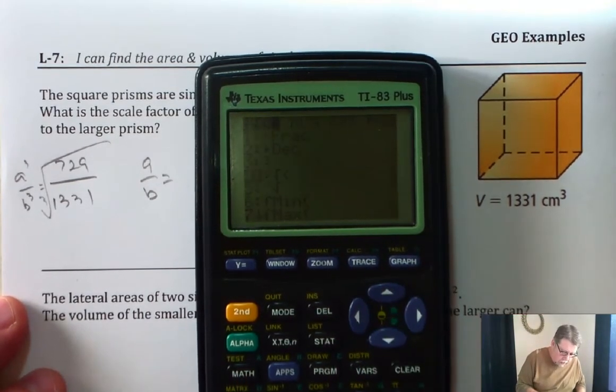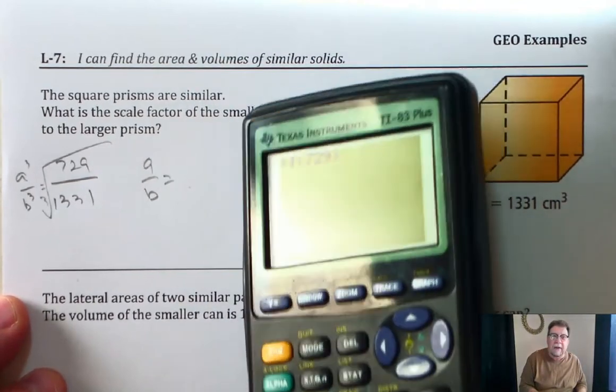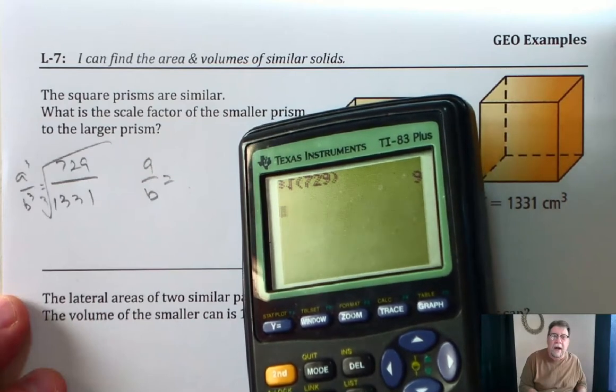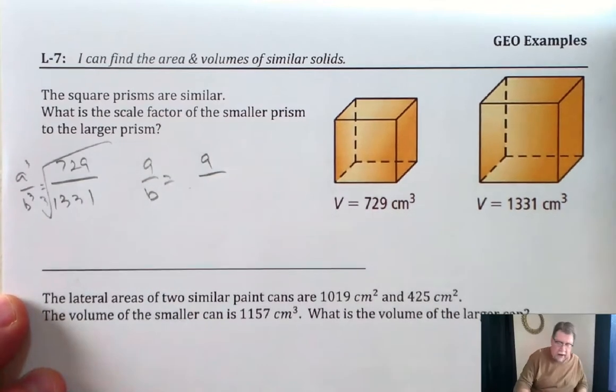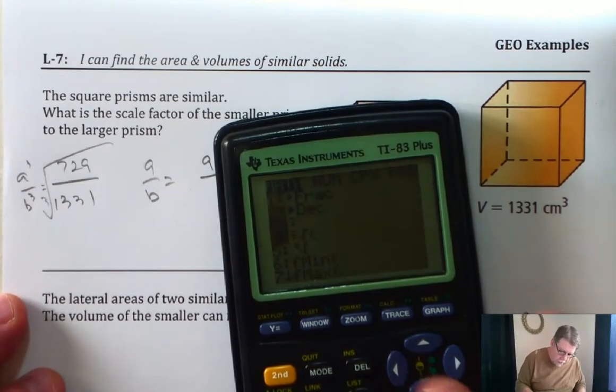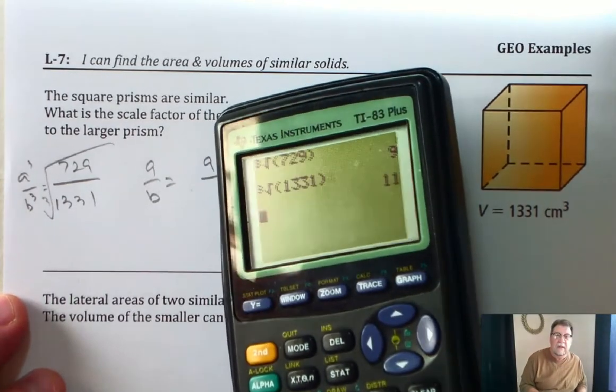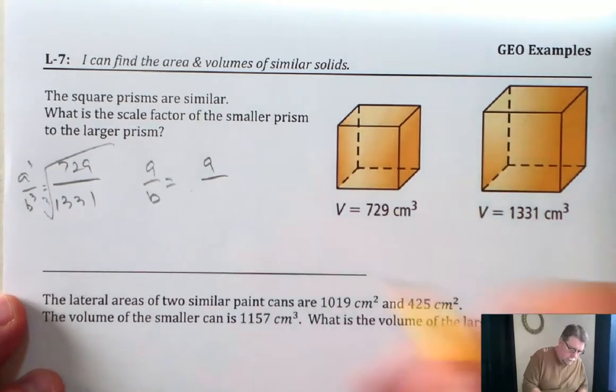My cubed root button is here. And so if you can see that, I really should have my other calculator. The cubed root of 729 is 9, so a is 9. And then the cubed root of 1331 is 11. So there's the b value.